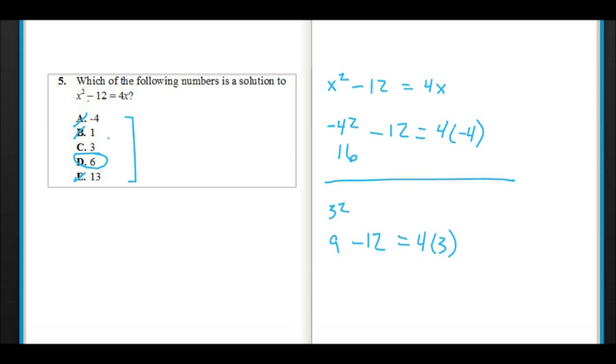So, remember on the ACT, eliminating all the wrong answers is just as good as picking the right one. And sometimes that's what you need to do. Just to make sure we've got the right answer, if we plugged in 6 for x, it would be 6² - 12 is supposed to equal 4 times 6. And that all works out to 36 - 12 is supposed to equal 24. And I think you can see that it does, 24 equals 24. And so, D is the answer for number 5 of our ACT math practice test.